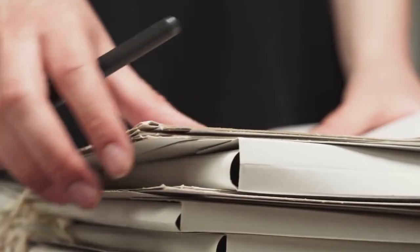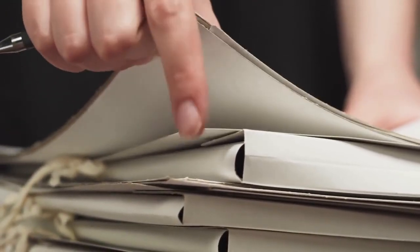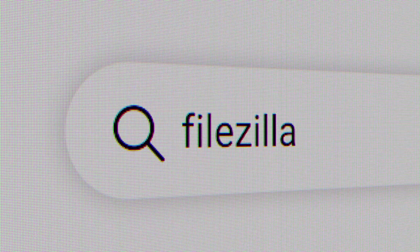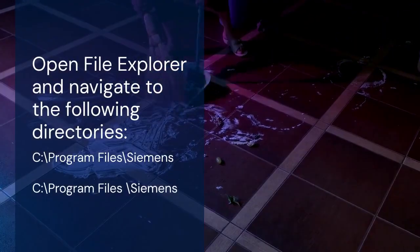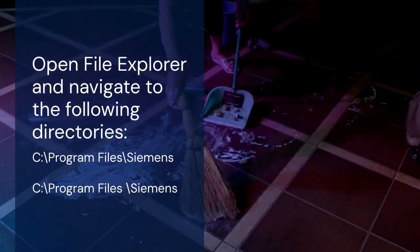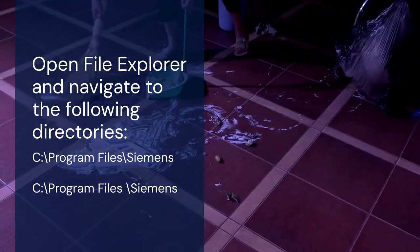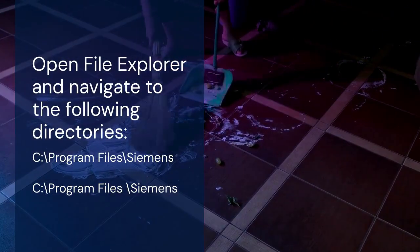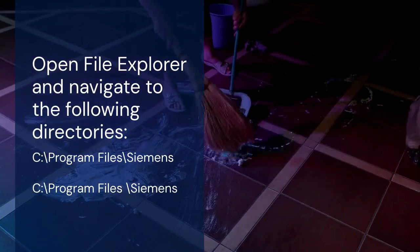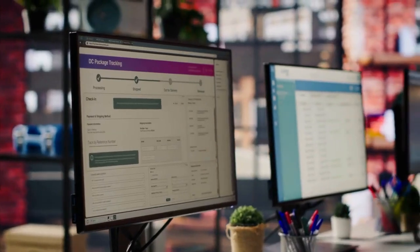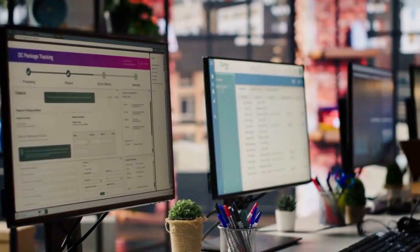Remember to back up your registry before making any changes. To do this, go to File, then Export, and save the registry file to a safe location. After cleaning the registry, we'll check for remaining files and folders. Open File Explorer and navigate to the following directories: C:\Program Files\Siemens and C:\Program Files (x86)\Siemens. Look for any folders related to Simatic Shell and delete them.